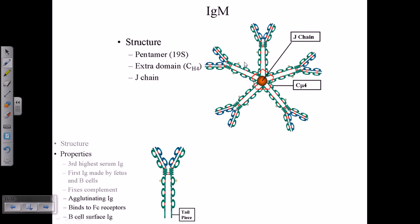The properties of IgM: it's the third highest serum immunoglobulin and the first immunoglobulin made by the fetus. All B cells have default programming to produce IgM.